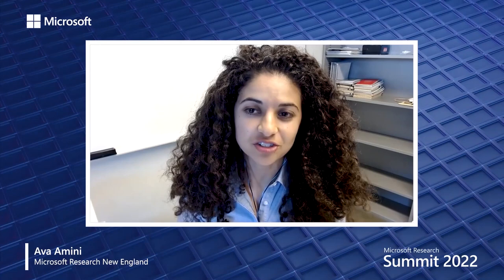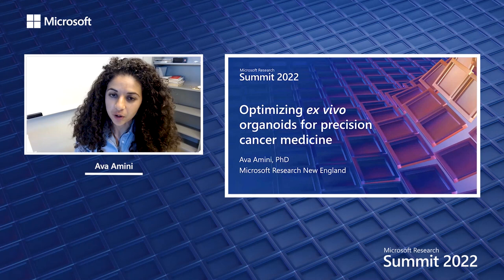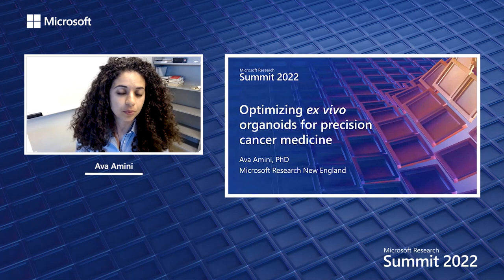Hello everyone, my name is Ava Amini. I'm a senior researcher at Microsoft Research New England, and I'm thrilled to share some of our recent work in developing computational methods and frameworks to optimize tumor organoids for precision cancer medicine.